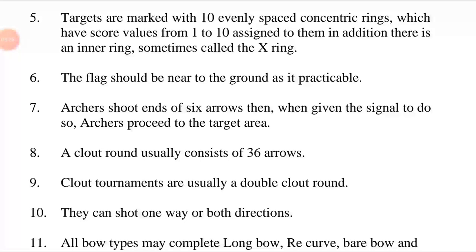The recurve target is 122 cm in diameter with a 10 ring of 12.2 cm in diameter. The compound target is 80 cm in diameter with a 10 ring of 8 cm in diameter. In international competition, compound targets only include yellow, red and blue rings, plus an inner 10 ring sometimes called the X ring. Outdoors, it serves as a tiebreaker with the archer scoring the most X's winning.